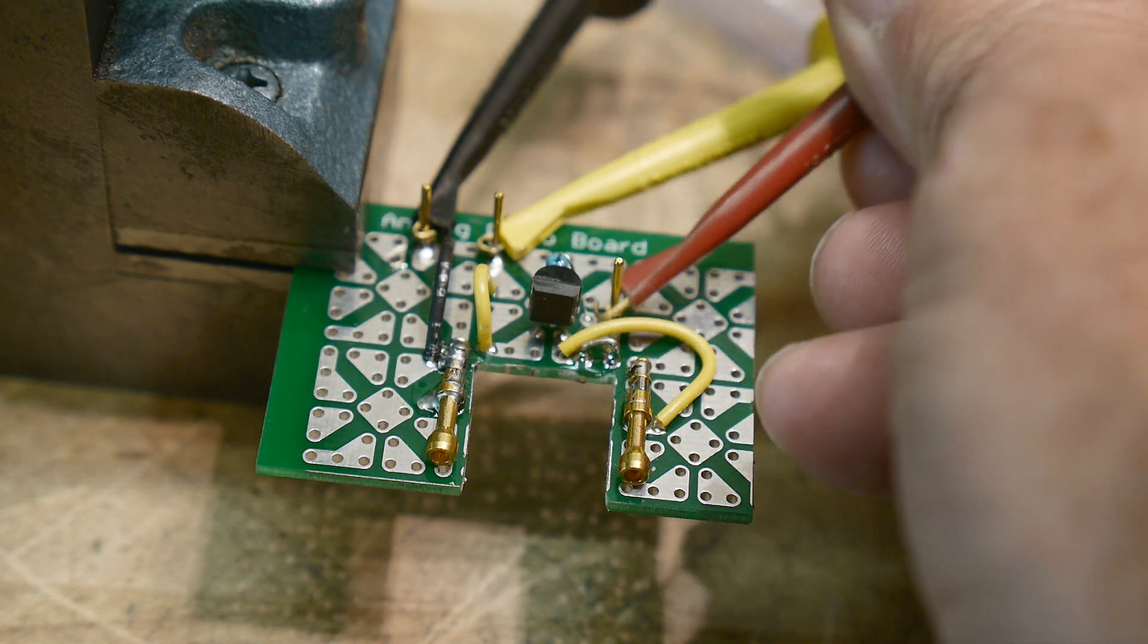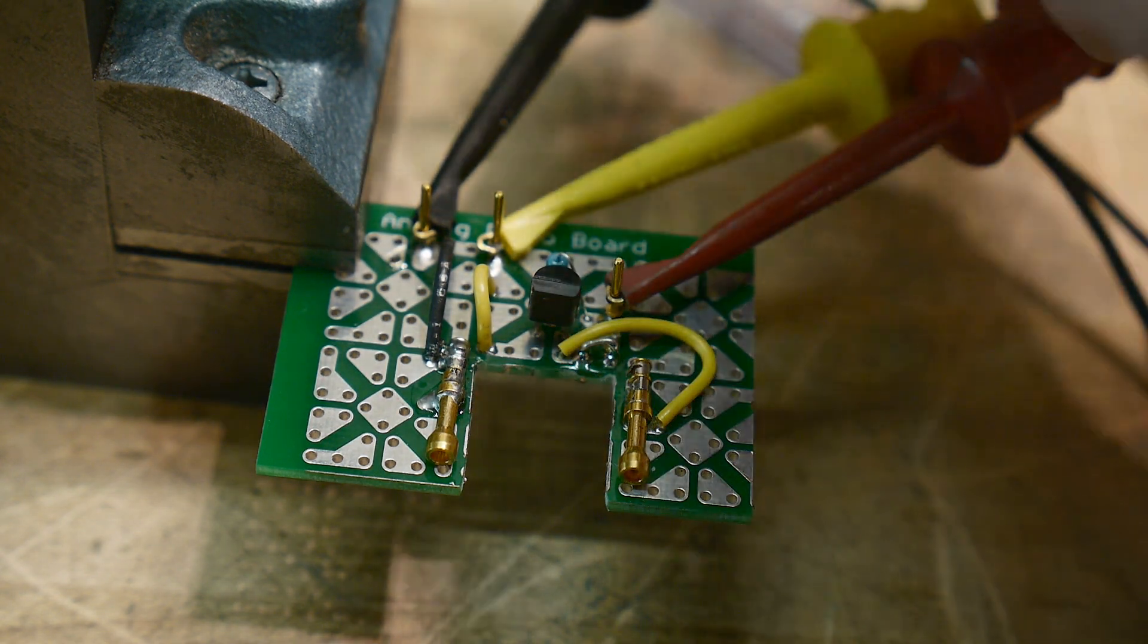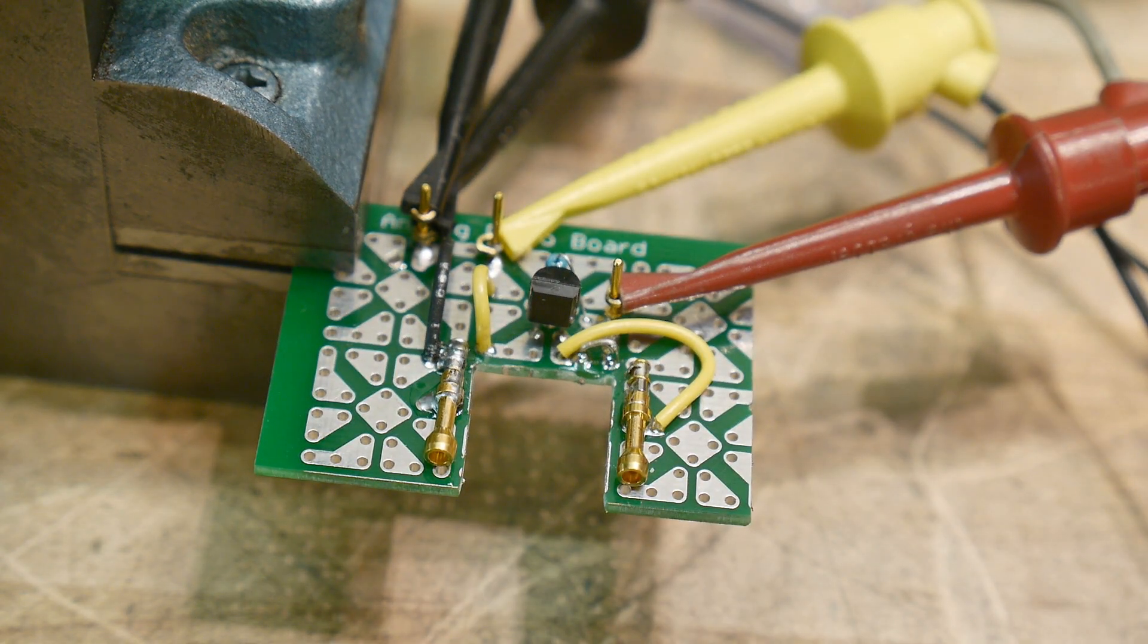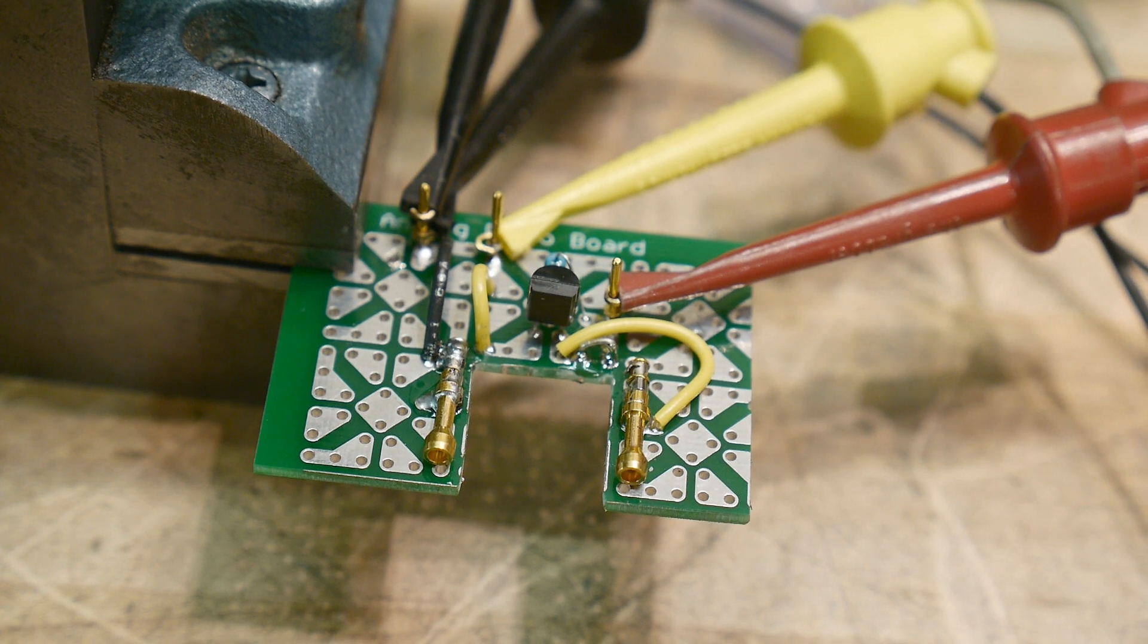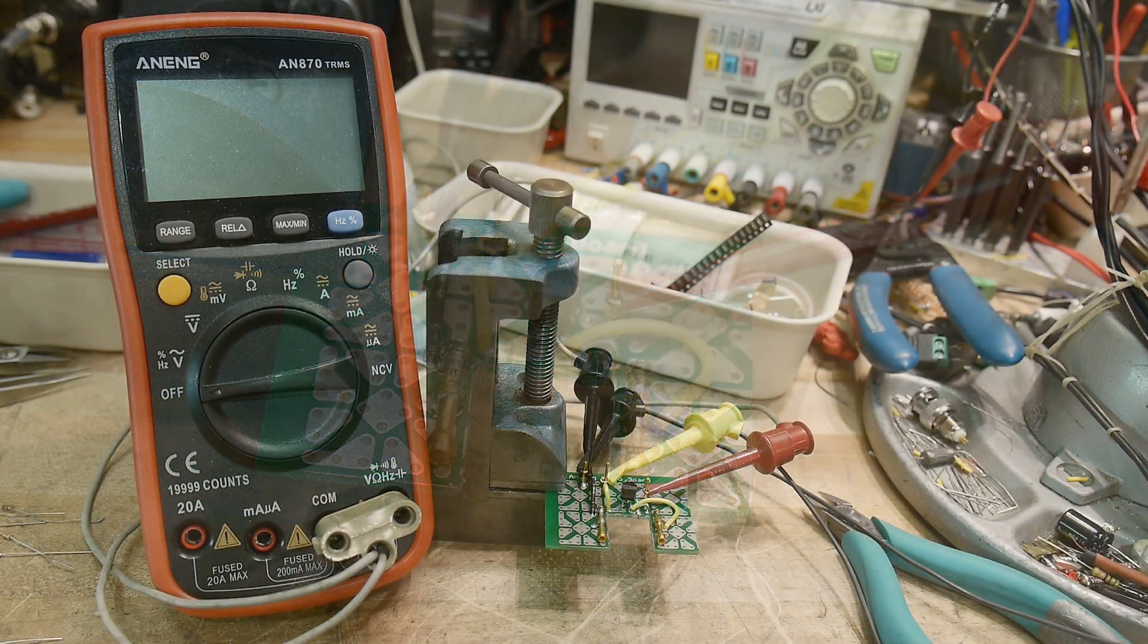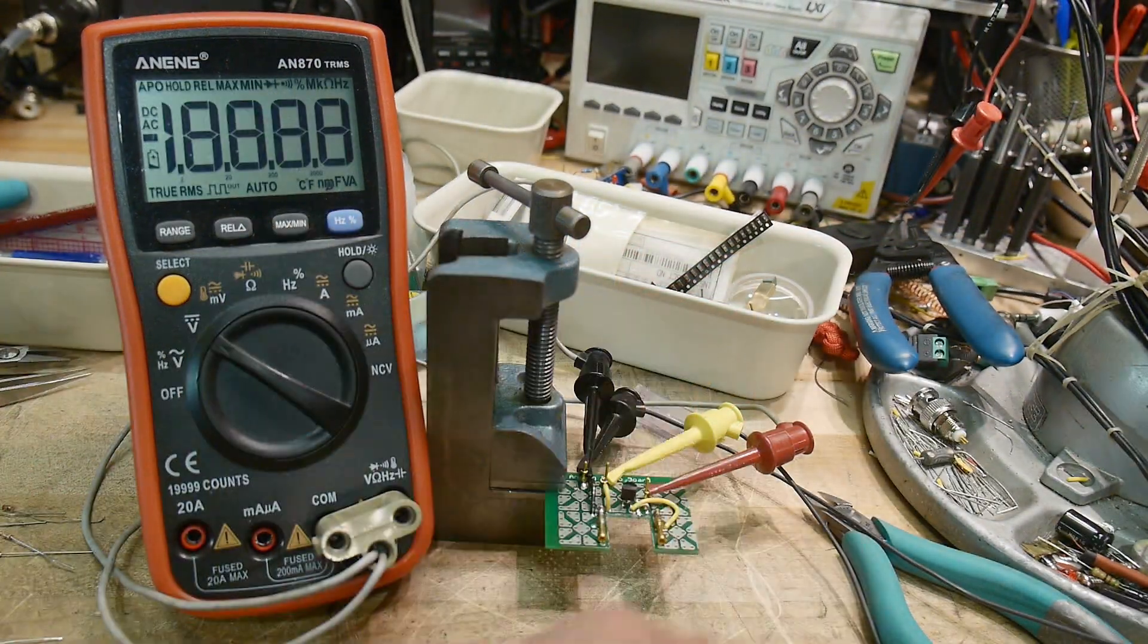So this is one connection and then the ground connection over here, and then we should be able to lay the diode there and measure them. So let's get the measurement device in the screen here. There we go. Let's put it on DC volts.